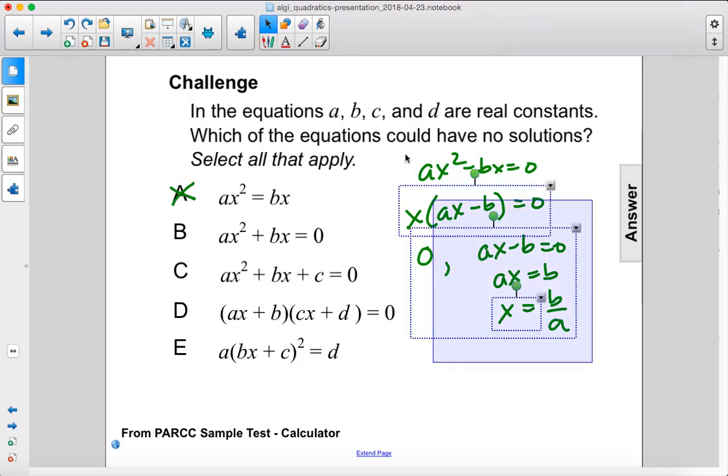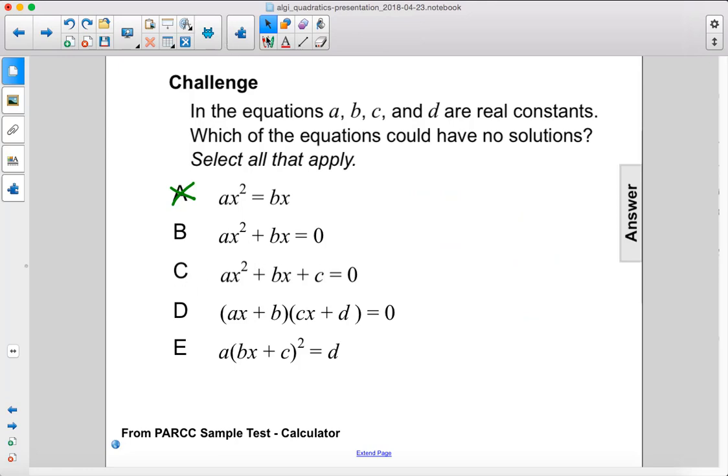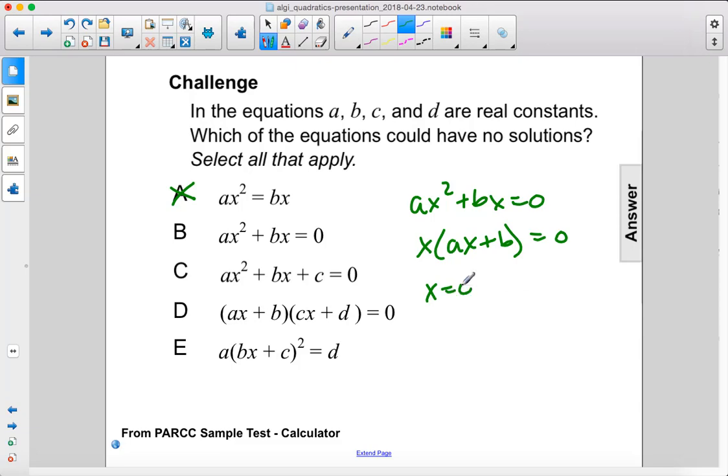I'm going to erase this work to move on. B here, we have ax squared plus bx equals 0, so we factor out an x, we get x times ax plus b equals 0. So we have either x equals 0 or ax plus b equals 0, and that would be ax equals negative b, so x equals negative b over a. So that's also two solutions, so it's not going to be b.